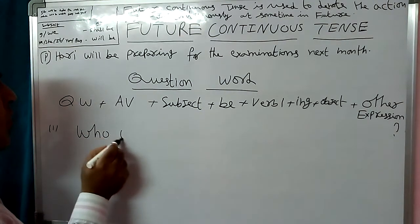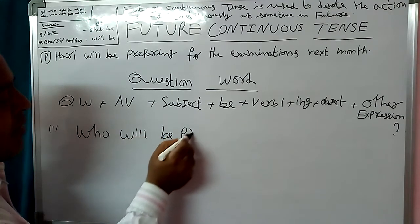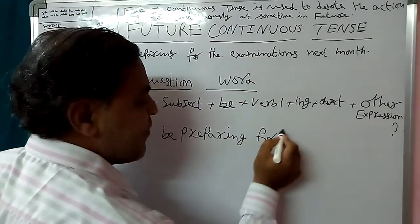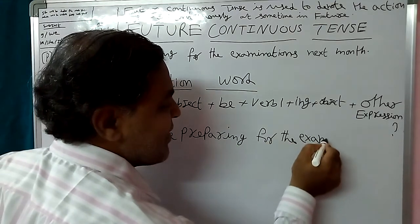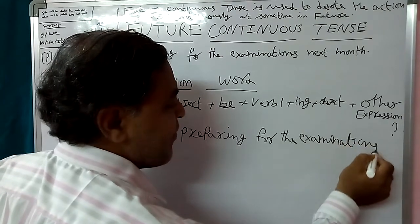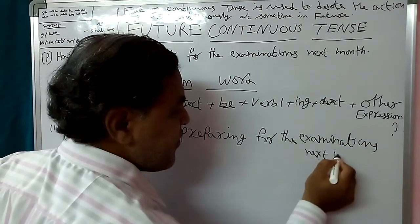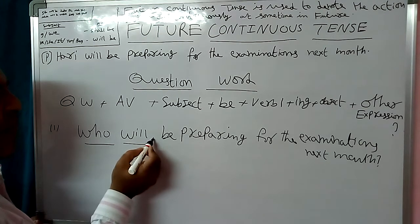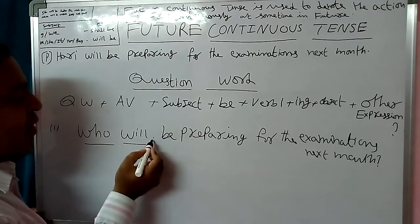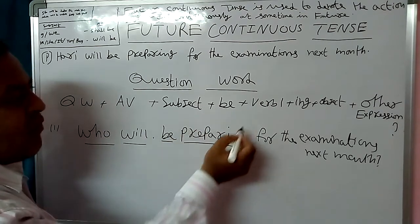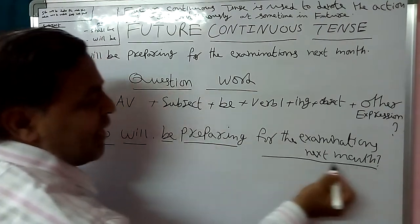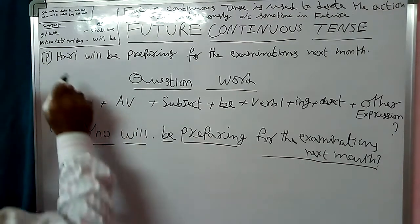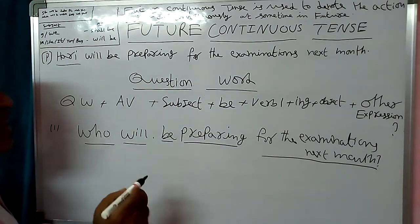Who will be preparing for the examinations next month? Here, 'Who' is the question word. The subject is not written because the subject is the answer. Structure: Who + Will + Be + Preparing (Verb 1 + -ing) + for the examinations + next month? Answer: Hari. Hari will be preparing for the examinations next month.